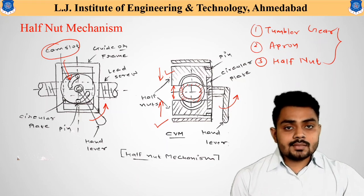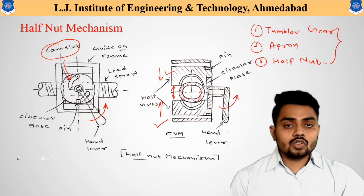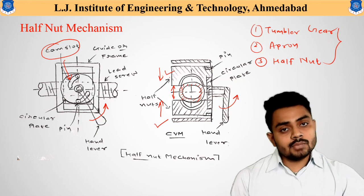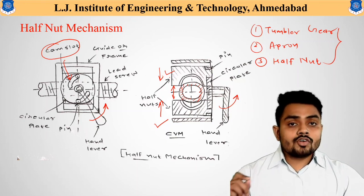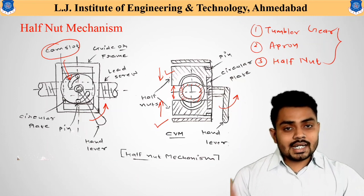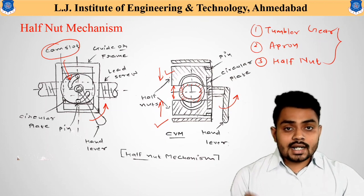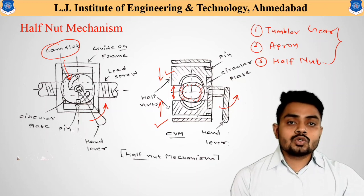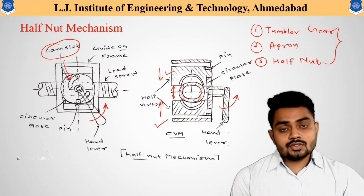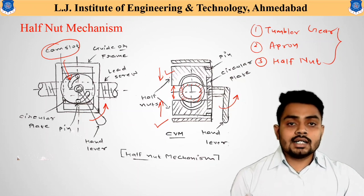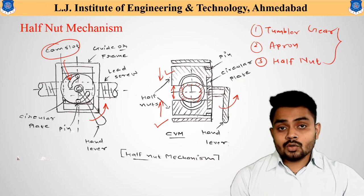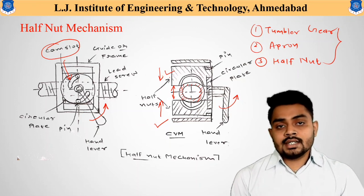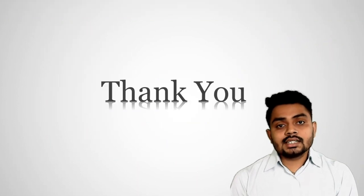If any one mechanism is not operated, it may result in failure of the automated movement of the cutting tool. To summarize: the tumbler gear mechanism provides motion from the spindle to the feed rod or lead screw; the apron mechanism transfers motion from the feed rod to the cutting tool by providing longitudinal or crosswise movement; and the half nut mechanism is used for engagement and disengagement of the lead screw for thread cutting operations.